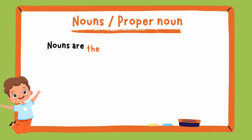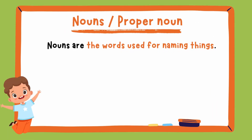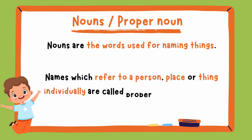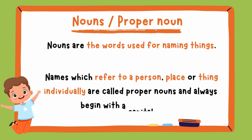Nouns are the words used for naming things. Names which refer to a person, place, or thing individually are called proper nouns and always begin with a capital letter.